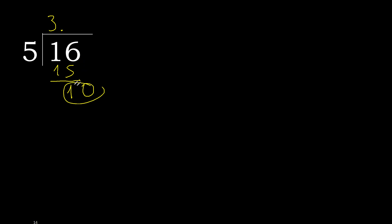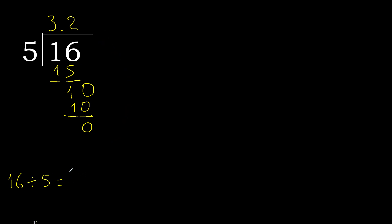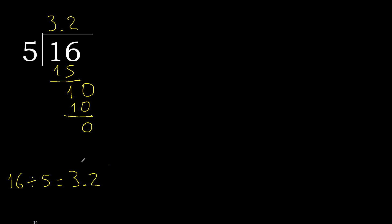10. 5 multiplied by 2 is 10 — exact. 10 minus 10 is 0, therefore finish. Therefore 16 divided by 5 equals 3.2.